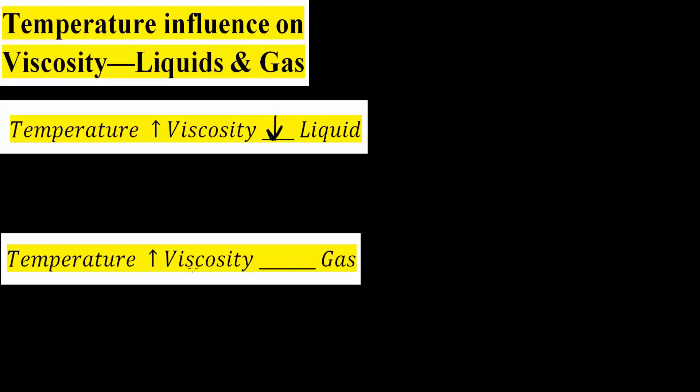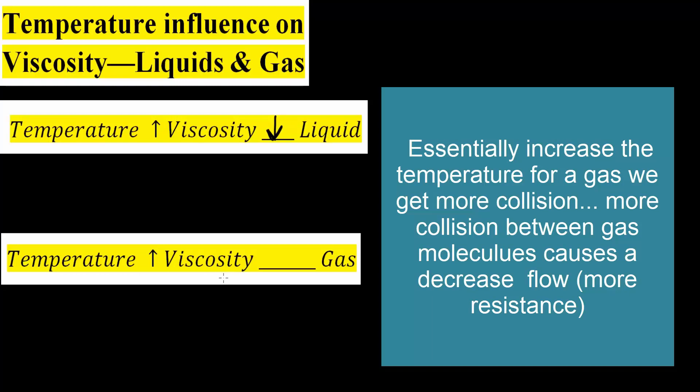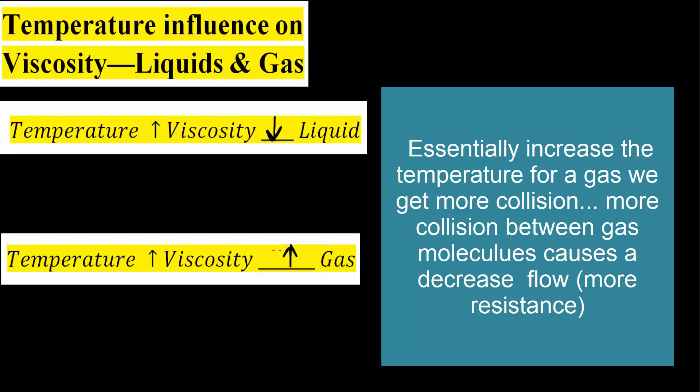our gas molecule's velocity also increases. And if that increases, we have more collision of molecules. And with more collision, we have more prevention of motion. And that's why viscosity would increase for a gas.